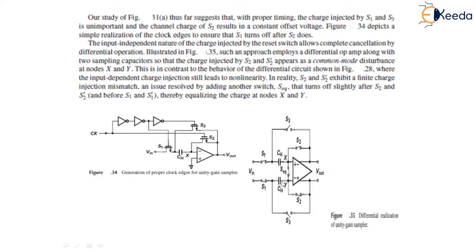differential opamp along with two sampling capacitors shown over here at node X and node Y, so that the charge injected by S2 and S2 prime appear as a common mode disturbance at node X and Y. This is a simple unity gain sampler or buffer in the case of discrete time. We have shown that when we use switches S1, S2, S3 to turn sampling mode to switch amplification mode, there are small errors introduced by the switch on timing.